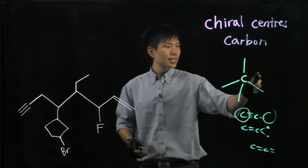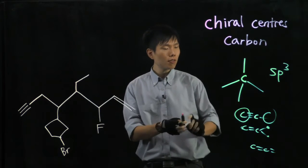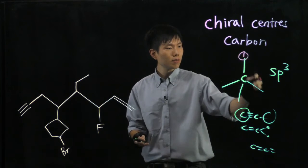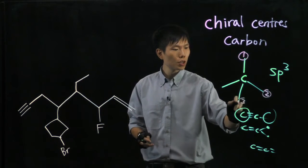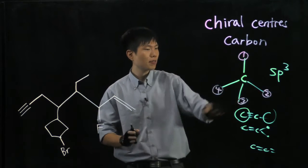But for this carbon here, it is sp3 hybridized. It could be chiral if the groups attached to it are all different. Let me just use one, two, three, and four. And they represent different structures around them.